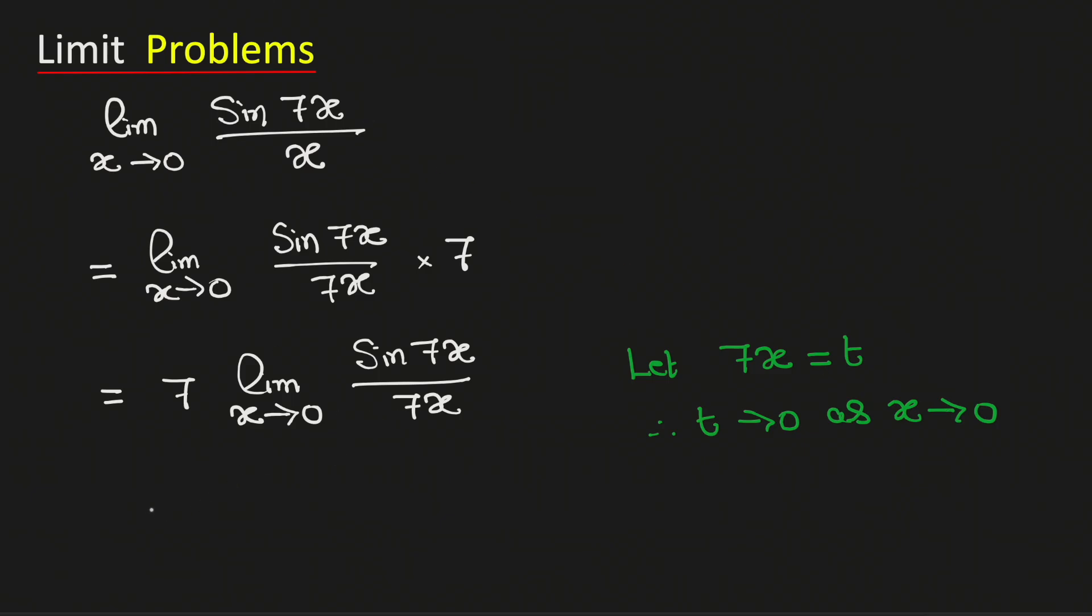Therefore this limit will be equal to 7 times the limit as t tends to 0 of sin(t)/t. We know this limit equals 1, so it will be equal to 7 times 1, which is 7.